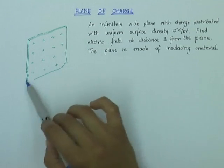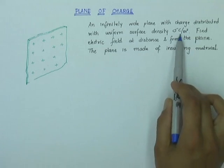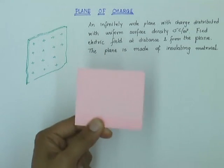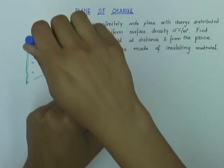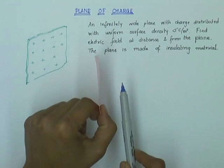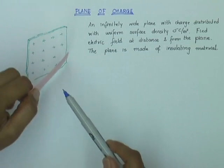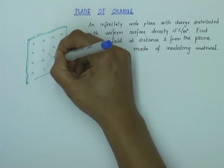In this problem we have an infinitely wide plane which extends up to infinity on all sides. It's made up of insulating material and it has a positive charge distributed at a uniform surface density of sigma coulombs per meter square. We want to find out the electric field at a distance l from the plane. We want to find the electric field at a point B which is at a distance l from the plane.